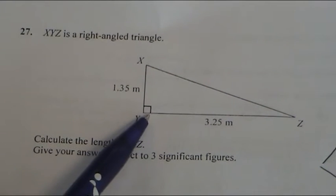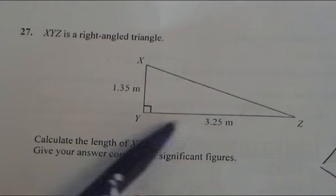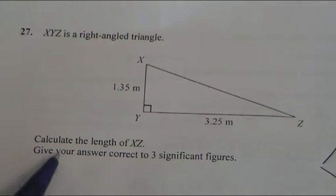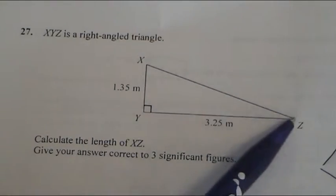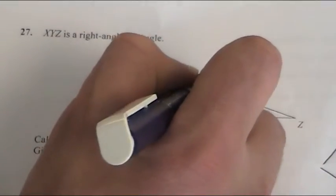And we've got a right-angled triangle that definitely means it's Pythagoras. We've got two lengths, and we're asked to find the length of XZ, so that's the distance between X and Z. I'm going to call this x for now.